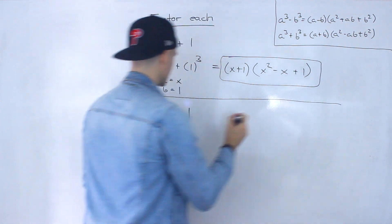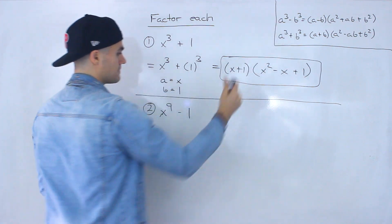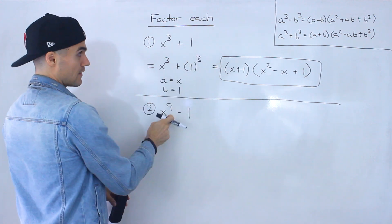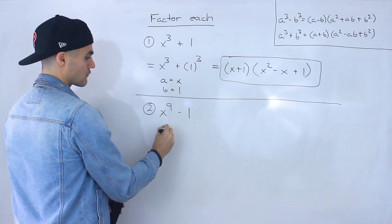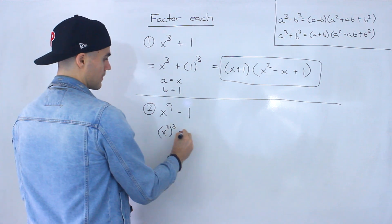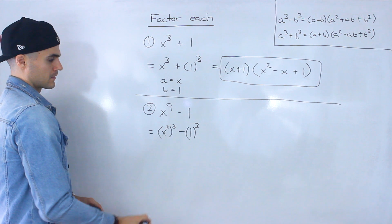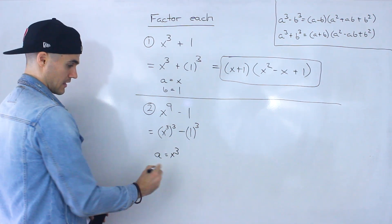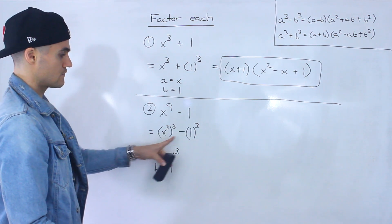Now for number two, we have x to the nine minus one. Notice this is going to be a difference of cubes, so we'll use that formula. First, I'm going to rewrite this in that format. Notice x to the nine can be rewritten as x to the power of three, to the power of three. And the one can be written as one to the power of three. So in this case, the a value is x to the three and the b value is one.